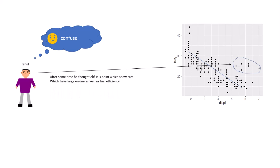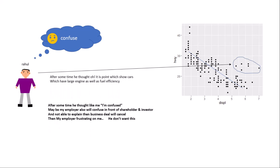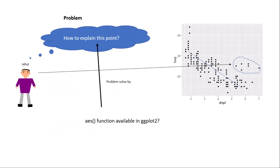There is an inverse relationship, and there are some separate points visible in the graph. Rahul thought: if I am confused, maybe my employer will also be confused in front of shareholders and investors, and maybe not able to explain it — and due to this the business deal will cancel and my employer will be frustrated with me. The problem is: how do you explain these points in a graphical way so that every person can understand easily?